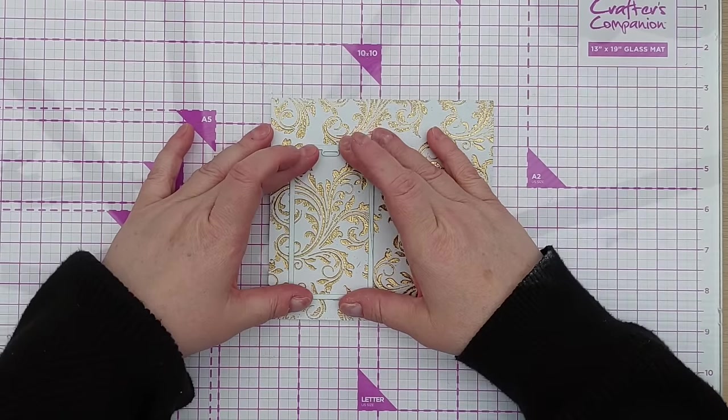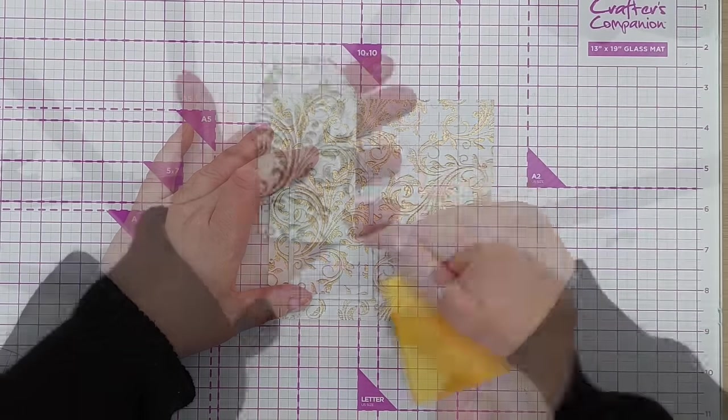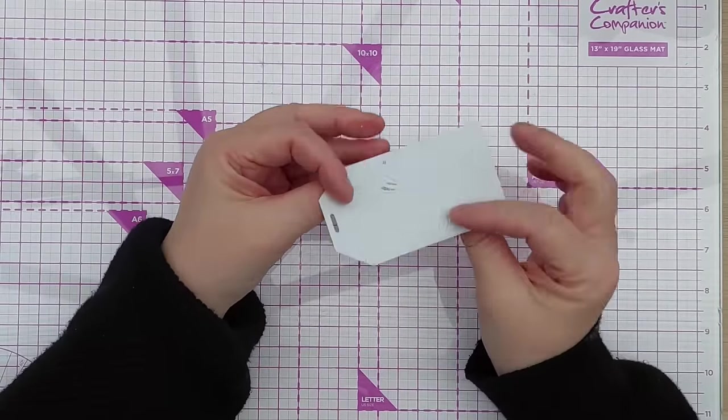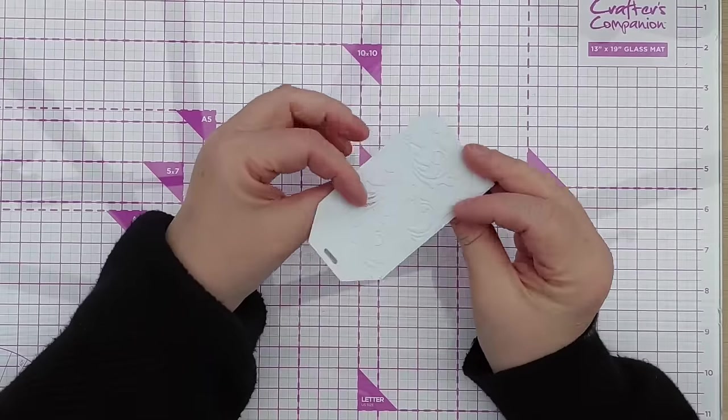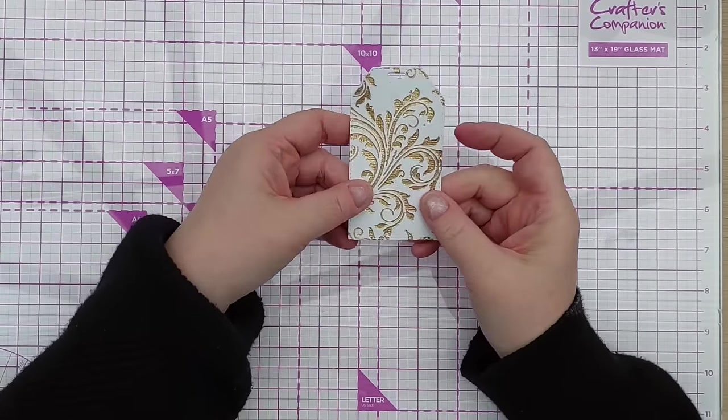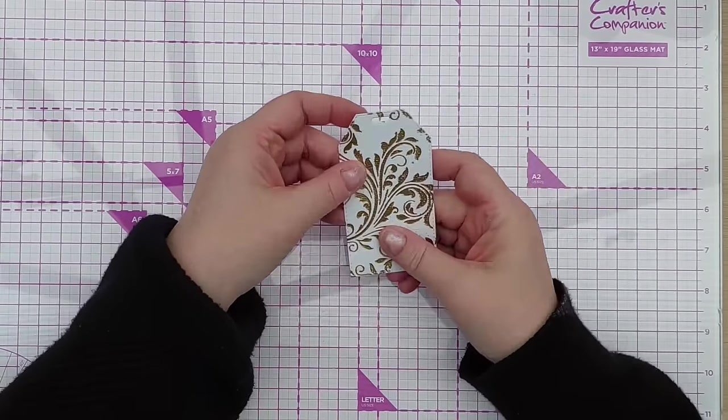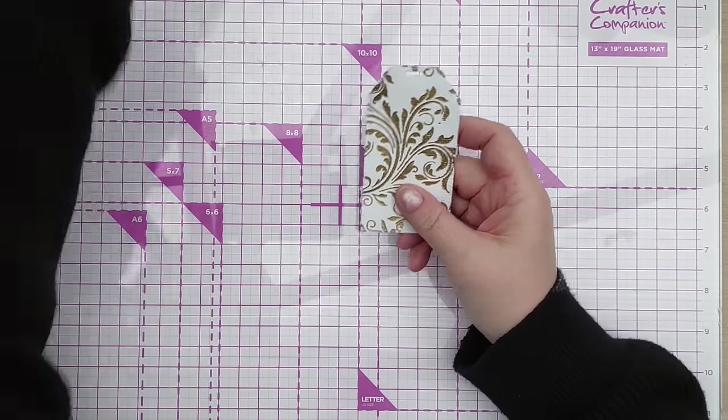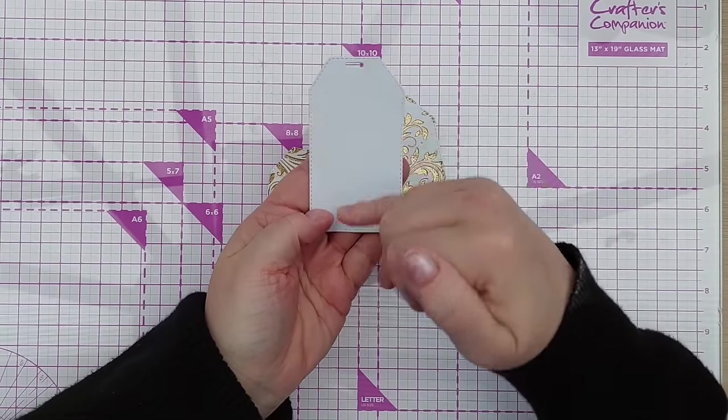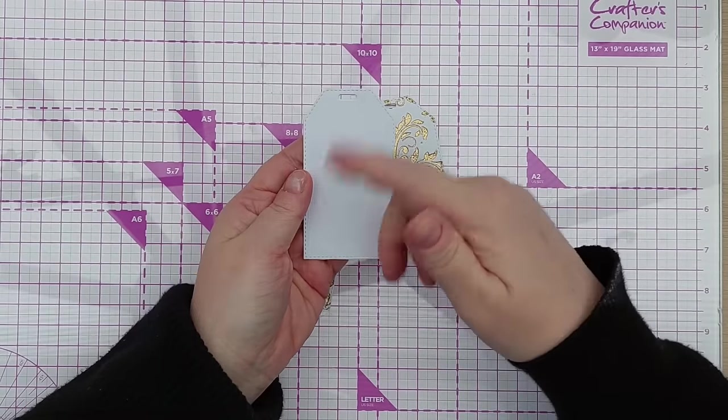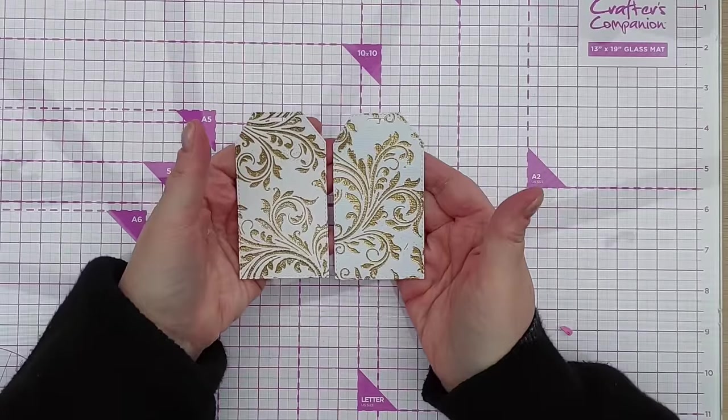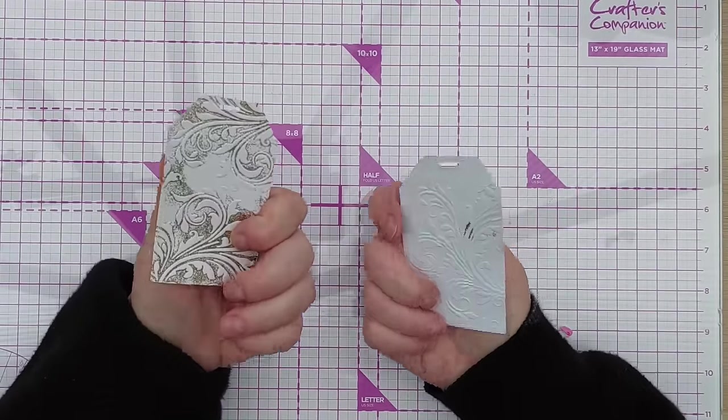So by die cutting this, it slightly squished the debossing, but it's still there, it's still textural, so that's fine. If you wanted to avoid that little bit of squishing, you could cut the tag and then do the embossing folder and the heat embossing. That's what I did with this one, but as you can see, you can't really tell the difference, so you could do it either way.